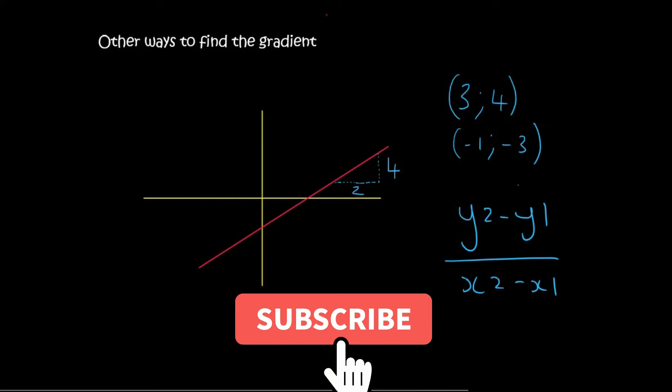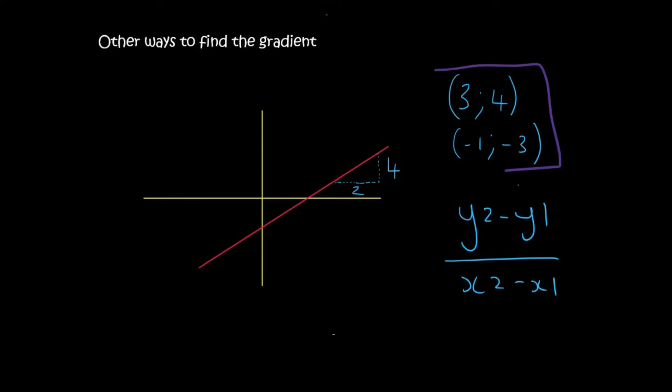Just to practice that quickly, if we had these coordinates over here, you would have to choose which is point number 2 and which is point number 1. For example, we could choose this as point 2 and the bottom one as point number 1. You would then just fill in the formula. Also remember that the y values are there and the x values are there.